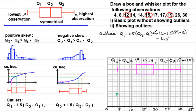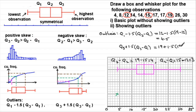For the upper outlier boundary, we use Q3 plus 1.5 times the interquartile range: 19 plus 1.5 times (19 minus 12), which gives us 26.5. Do we have anything greater than 26.5? Not 26, but 30 is — so 30 is an outlier.